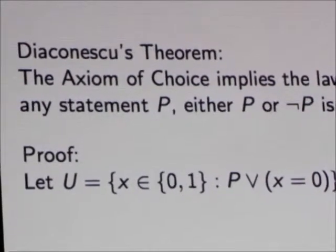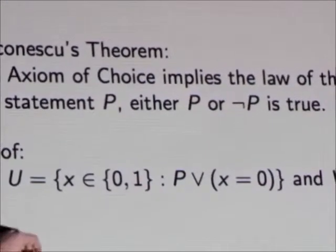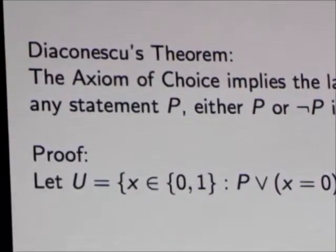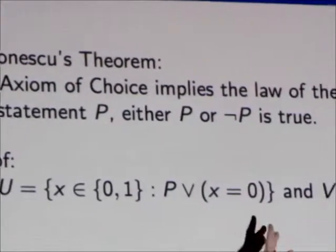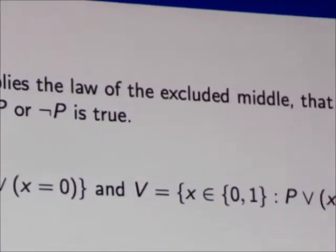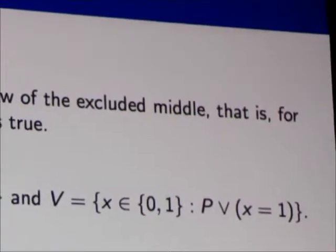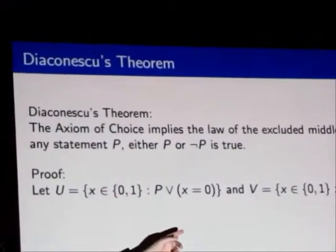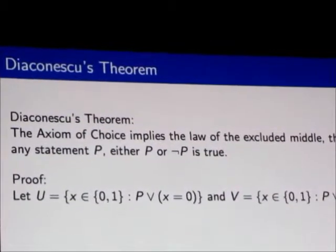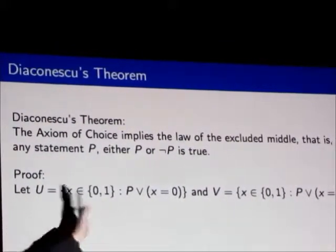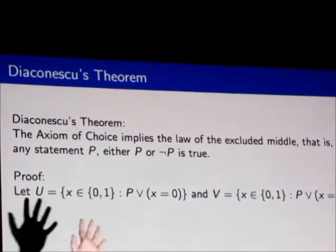I'm going to define two sets, U and V. U is the collection of all x's in {0,1} such that either P is true or x equals 0. And V is exactly the same, except it's saying P is true or x equals 1. If I already know that P is true, then U is just {0,1} and V is also {0,1}. But if I don't know that, I want to establish this. I'm not going to assume this. On the face of it, I'm totally allowed to define sets in this way.